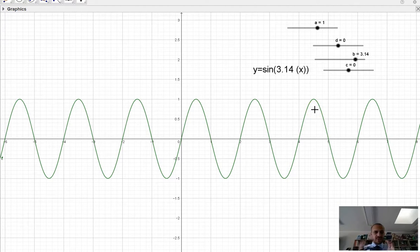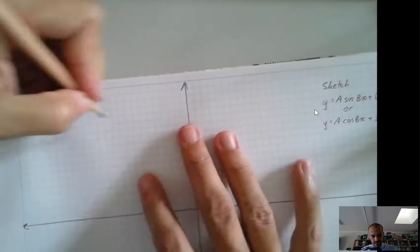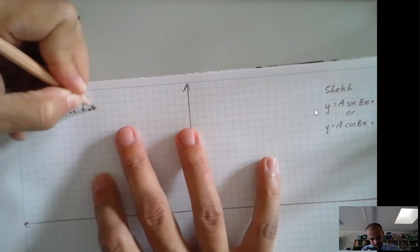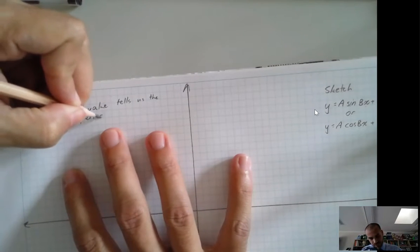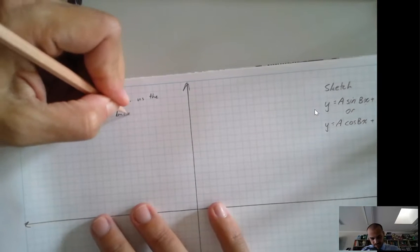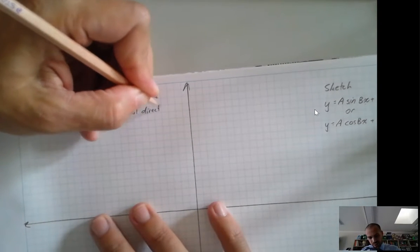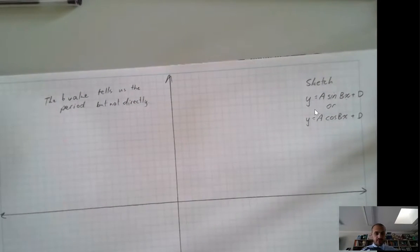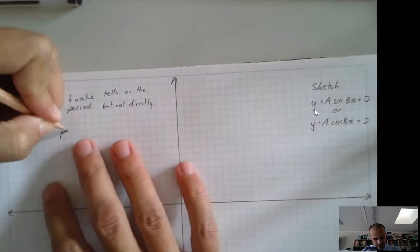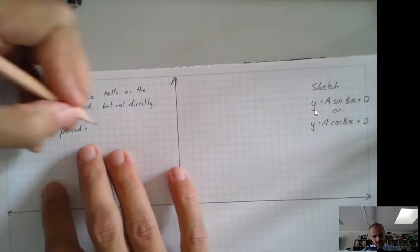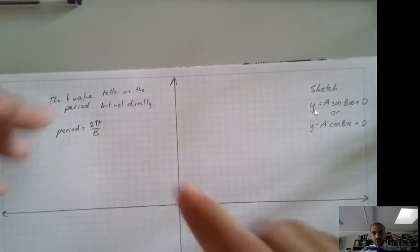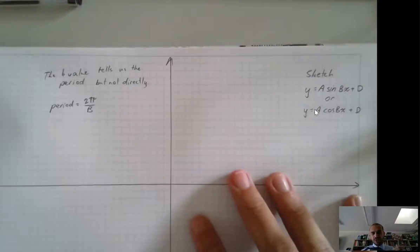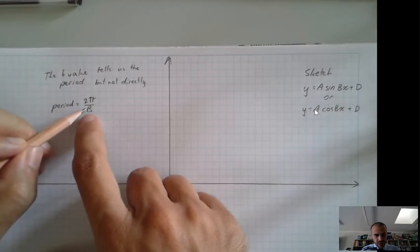So the b value, it's a slightly more complicated thing. So we're definitely going to have to write something down here. So the b value tells us the period, but not directly. You can't just look at the b value and say, the b value is 5, so the period is 5. It doesn't work that way. We can say that the period is equal to 2 pi on b. So if we want to know what the period of our function is going to be, how long it takes to repeat, then we have to do 2 pi divided by whatever the b value was.